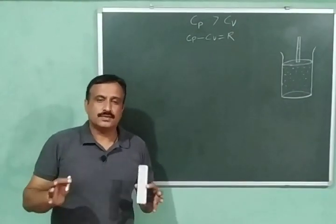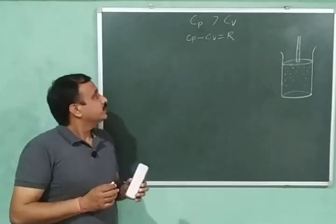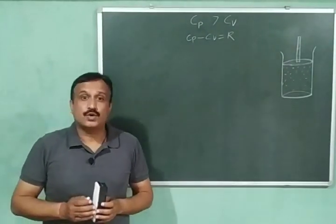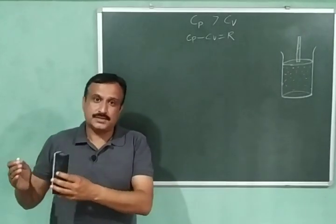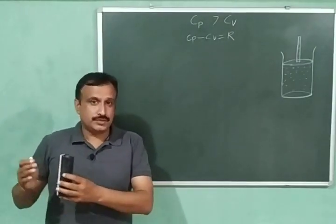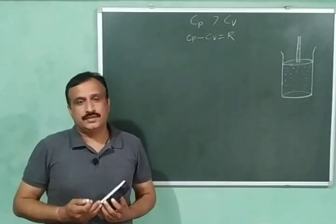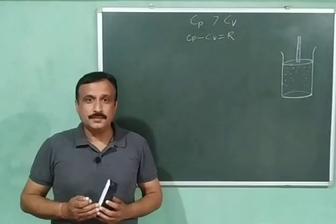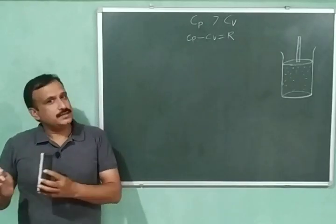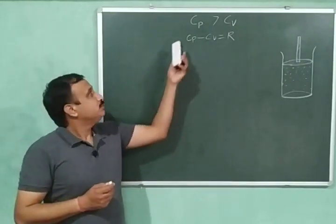Hi everyone, welcome back to DMG chemistry classes. Today I am going to explain two very important topics: first, CP is greater than CV, which means heat capacity at constant pressure is more than heat capacity at constant volume. Second, we will derive an expression relating CP and CV, that is CP minus CV is equal to R. So let us start with CP is greater than CV.